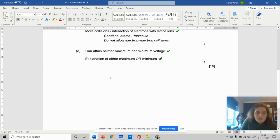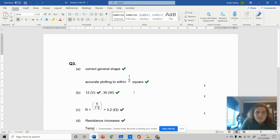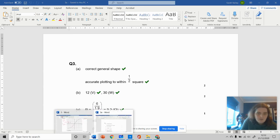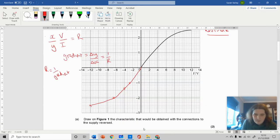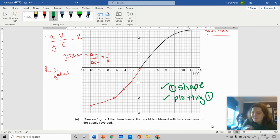If you look at the marking, it says the correct general shape and accurate plotting within half a graph. You get one mark for the shape, which is the opposite curve, and another mark for the plotting. It's much easier when you've got a piece of paper and can turn the graph upside down.